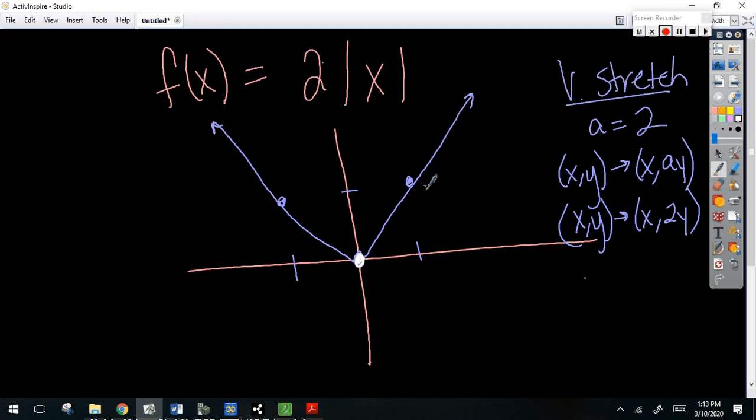All right, if this was 1, 1, and every point, my X stays the same, but my Y doubles. What is my new point? 1, 2. Do we see that? 1, 1 now becomes 1, 2. Does that make sense?